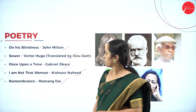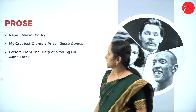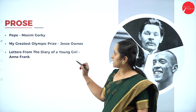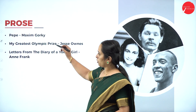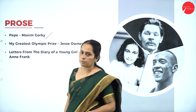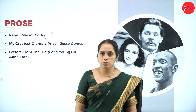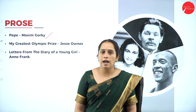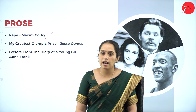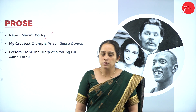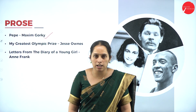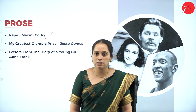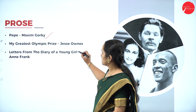Next, let us move on to the prose. Under prose, we are going to read Pepe, My Greatest Olympic Prize, and Letters from the Diary of a Young Girl. The first prose is Pepe by Maxim Gorky — a short story that deals with the Italian working class, their life and struggles. This story is centered around a 10-year-old boy named Pepe who belongs to a poor family and is frail physically but very clever mentally.